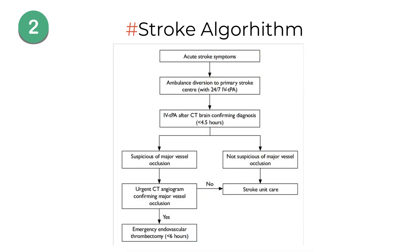Get a CT scan to determine if it's an ischemic or hemorrhagic stroke. For ischemic strokes, administer TPA if the patient is eligible and presents within three to four and a half hours of symptom onset. If TPA isn't suitable, consider endovascular therapy. Transfer the patient to a stroke unit for specialized care.